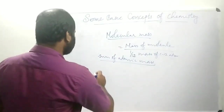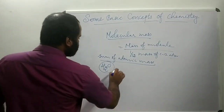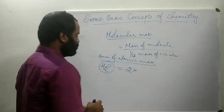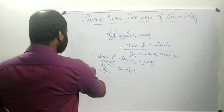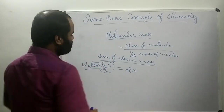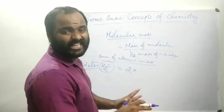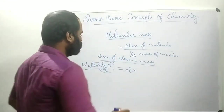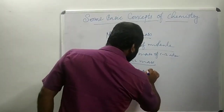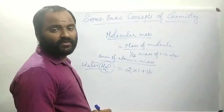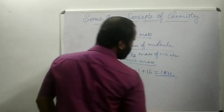For example, let's find the molecular mass of water (H₂O). There are 2 hydrogen atoms, so 2 × 1 (atomic mass of hydrogen is 1), plus the atomic mass of oxygen which is 16. So 2 + 16 = 18u. The molecular mass of water is 18u.